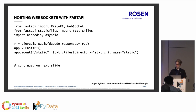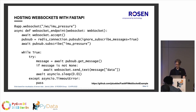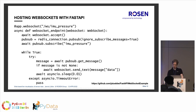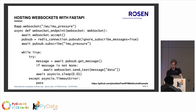The more important part is the WebSocket, hosted at the endpoint '/ws/imu_pressure' — for the combined data of the position and pressure sensor. We create a PubSub object and subscribe to the IMU pressure channel. Then a while loop runs: we try to get a message from the PubSub object — slightly different from PubSub.listen. If a message is available, we send it through the WebSocket; otherwise we do a short timeout. This runs continuously as long as the WebSocket is open.